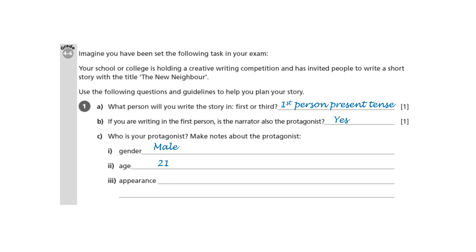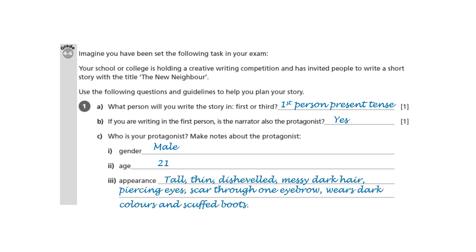Appearance — now this is important. I'm going to go for tall, thin, dishevelled, messy, dark hair, piercing eyes, scar through one eyebrow suggesting maybe he's had a lucky escape. Wears dark colours — could be he's a bit of a gloomy type, a bit of a goth. And scuffed boots, which could suggest that he doesn't take great care of himself, or just doesn't care very much about his appearance. Remember that any physical details you include should be significant — it's not just about making the character easy to visualise; you want to try to make these details do some work.